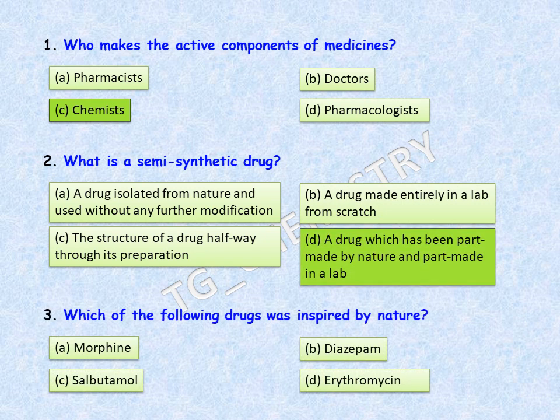Third question: which of the following drugs was inspired by nature? Options are: A, morphine; B, diazepam; C, salbutamol; D, erythromycin. The correct answer for this question is option C, salbutamol.